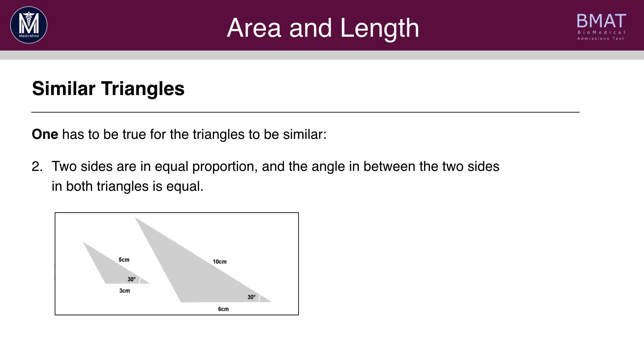Rule 2. Two sides are in equal proportion, and the angle in between the two sides in both triangles is equal. So here, 5 and 3 are in equal proportion to 10 and 6. And additionally, the angle in between is 30 degrees in each triangle.